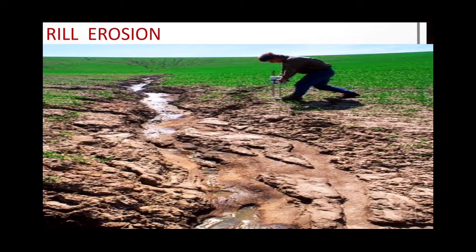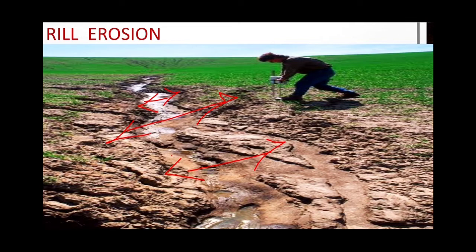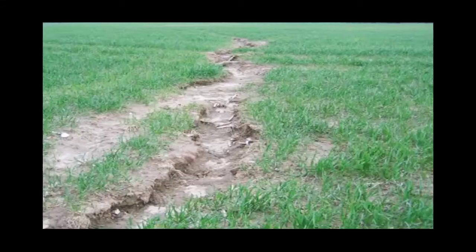Over a period of time, these fine rills increase in number and also become deeper and wider. You can see the width increasing as we move further. The soil is eroded from the top layer by the force of running water, forming finger-like rills on the landscape. This reduces the area under cultivation and the yield of crops. You can see this agricultural field has been rendered largely useless because of the rills formed.